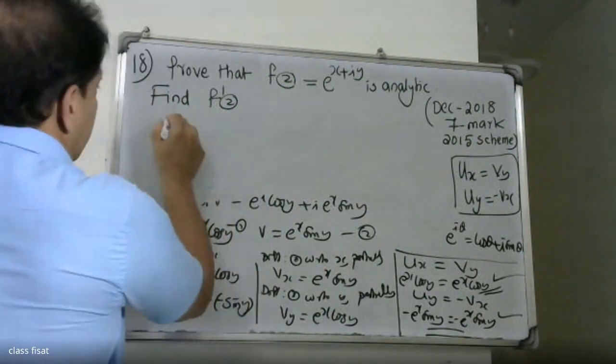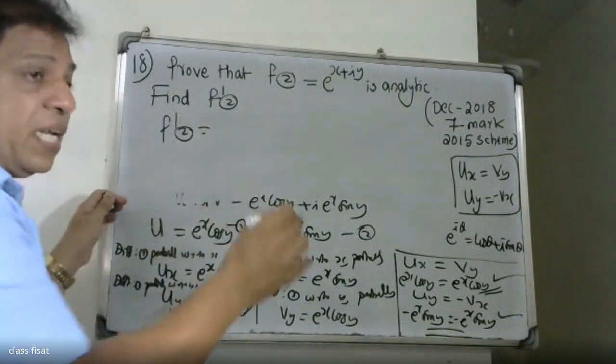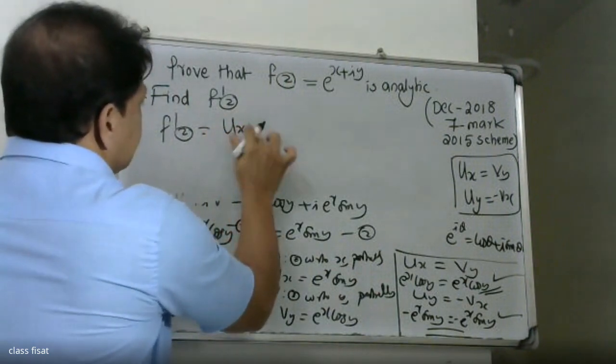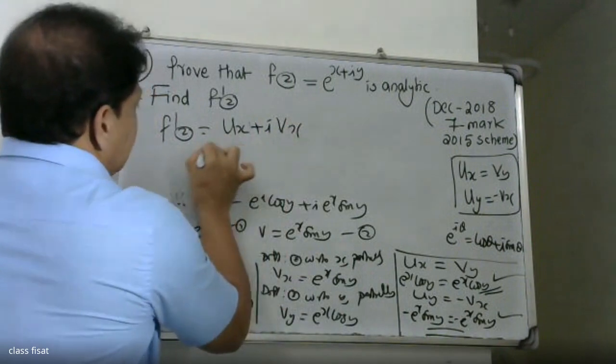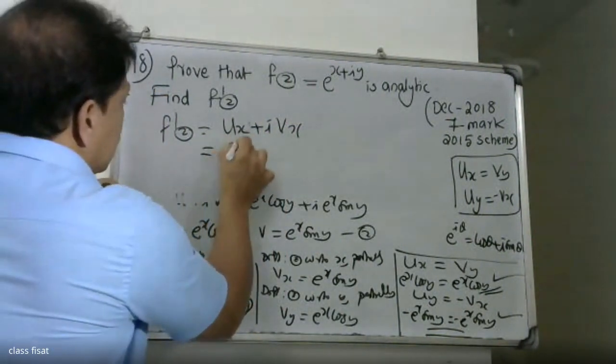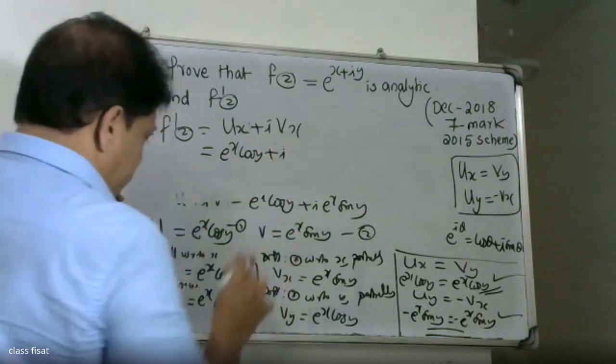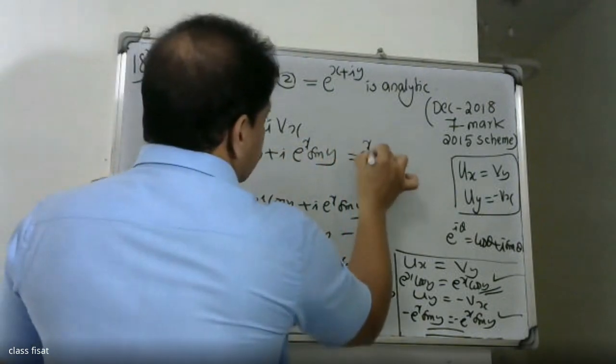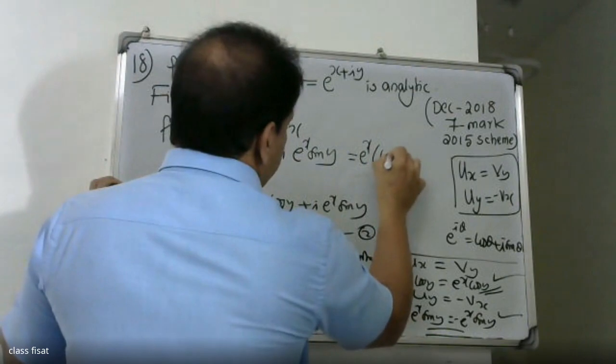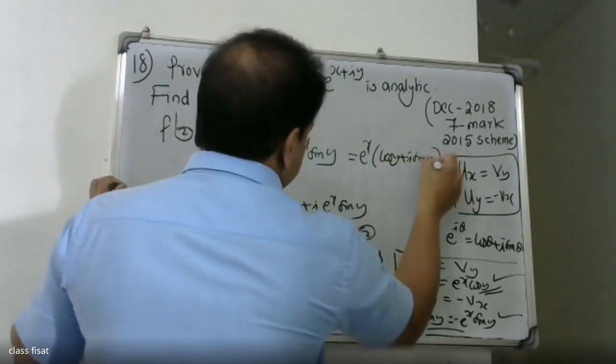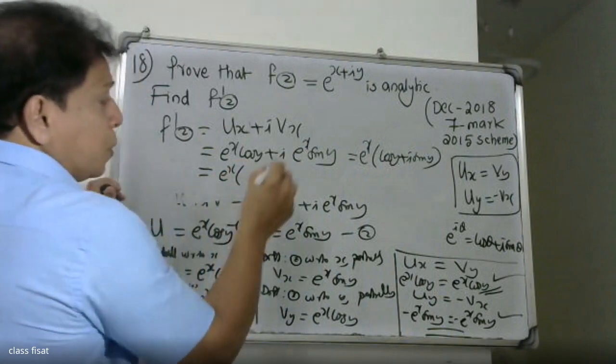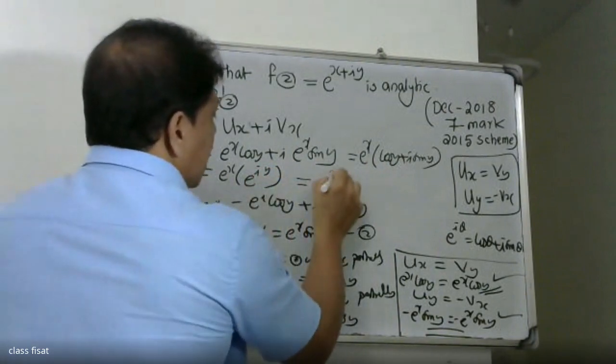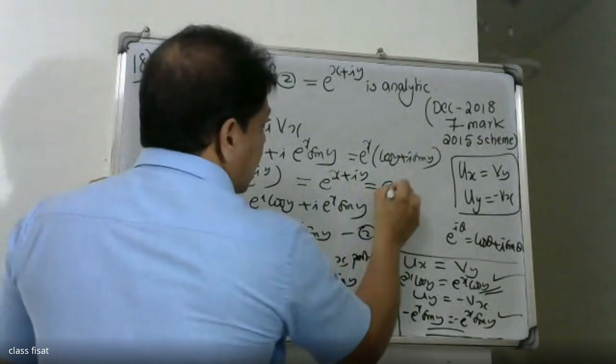Now let's find f'(z). The derivative is defined as f'(z) = ∂U/∂x + i·∂V/∂x. So f'(z) = e^x·cos(y) + i·e^x·sin(y). Factoring out e^x, we get f'(z) = e^x(cos(y) + i·sin(y)).